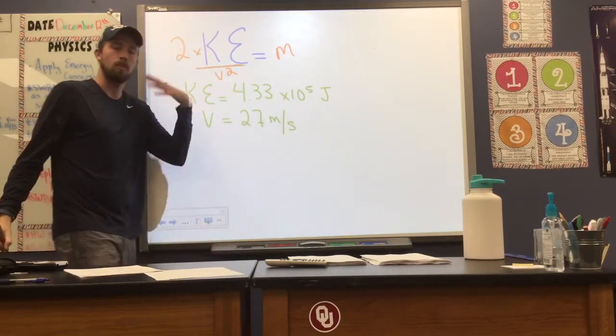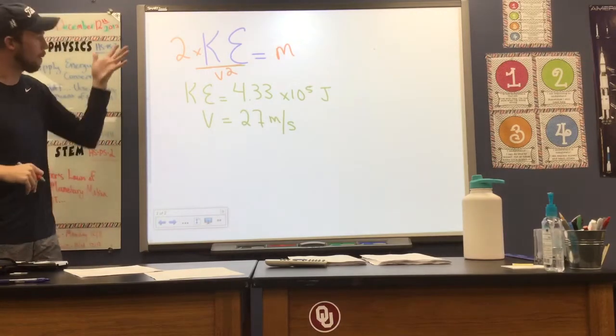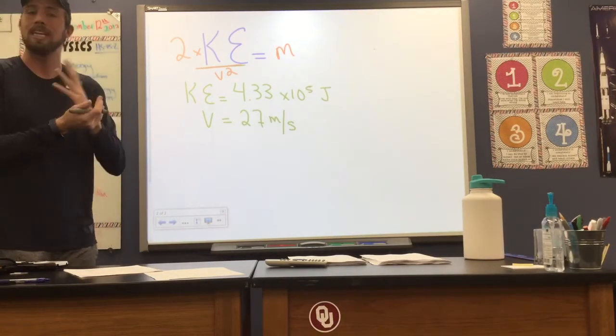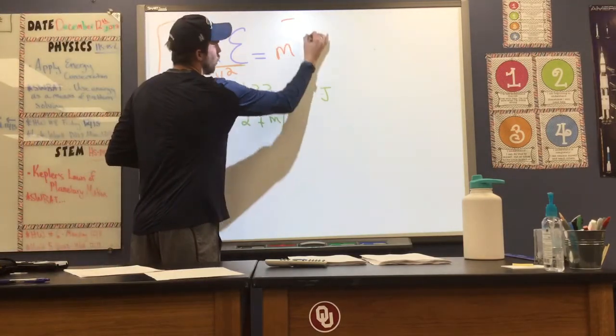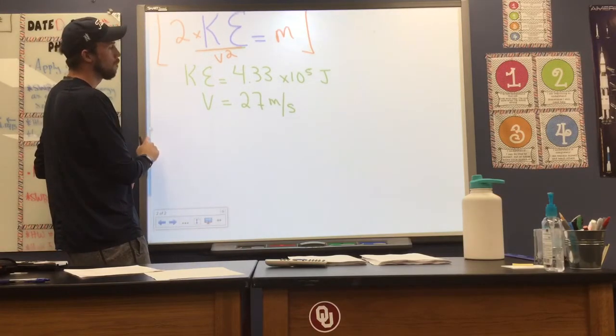So all I'm doing here is rearranging our equation algebraically to get that mass by itself. Now I can go through and plug in my kinetic energy and velocity without having to do anything else. I'm going to use this equation now to solve for the mass of our car. So 2 times our kinetic energy over v squared.